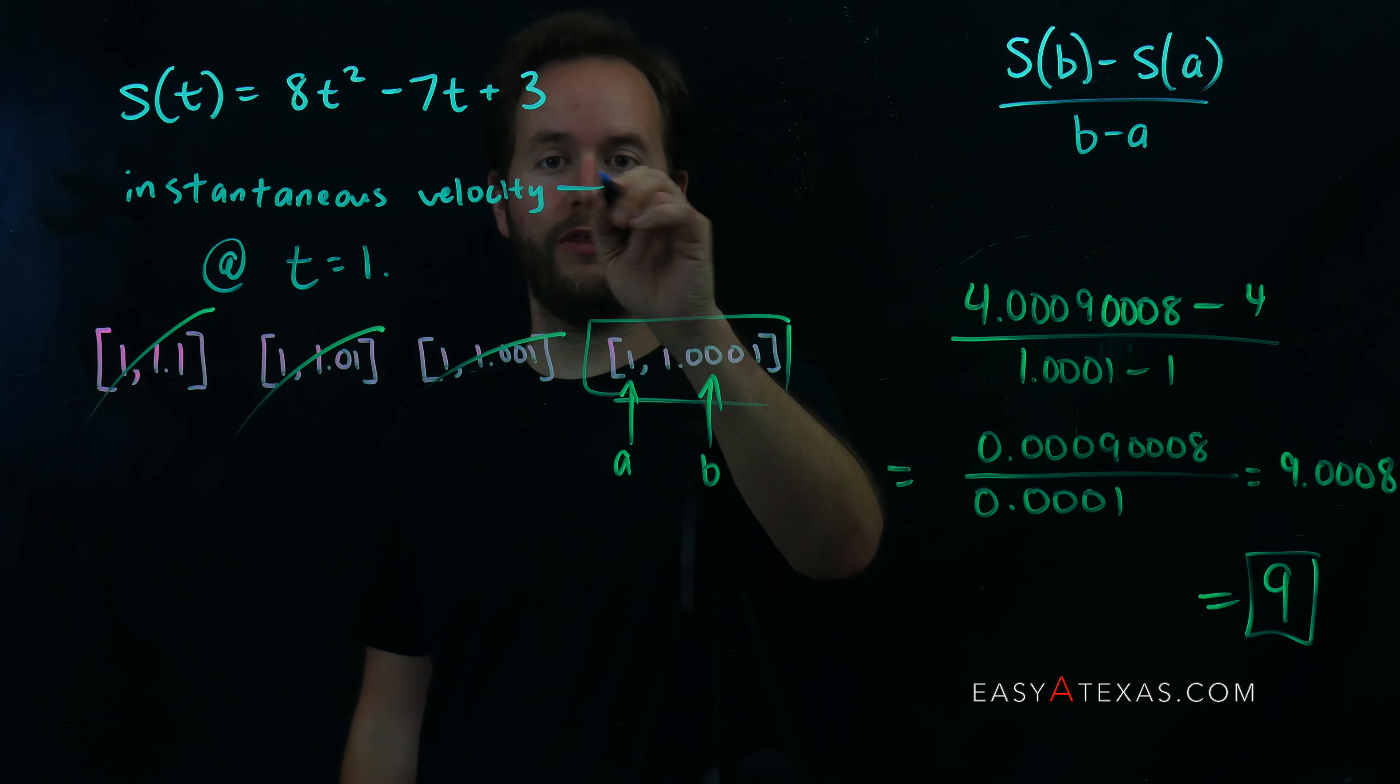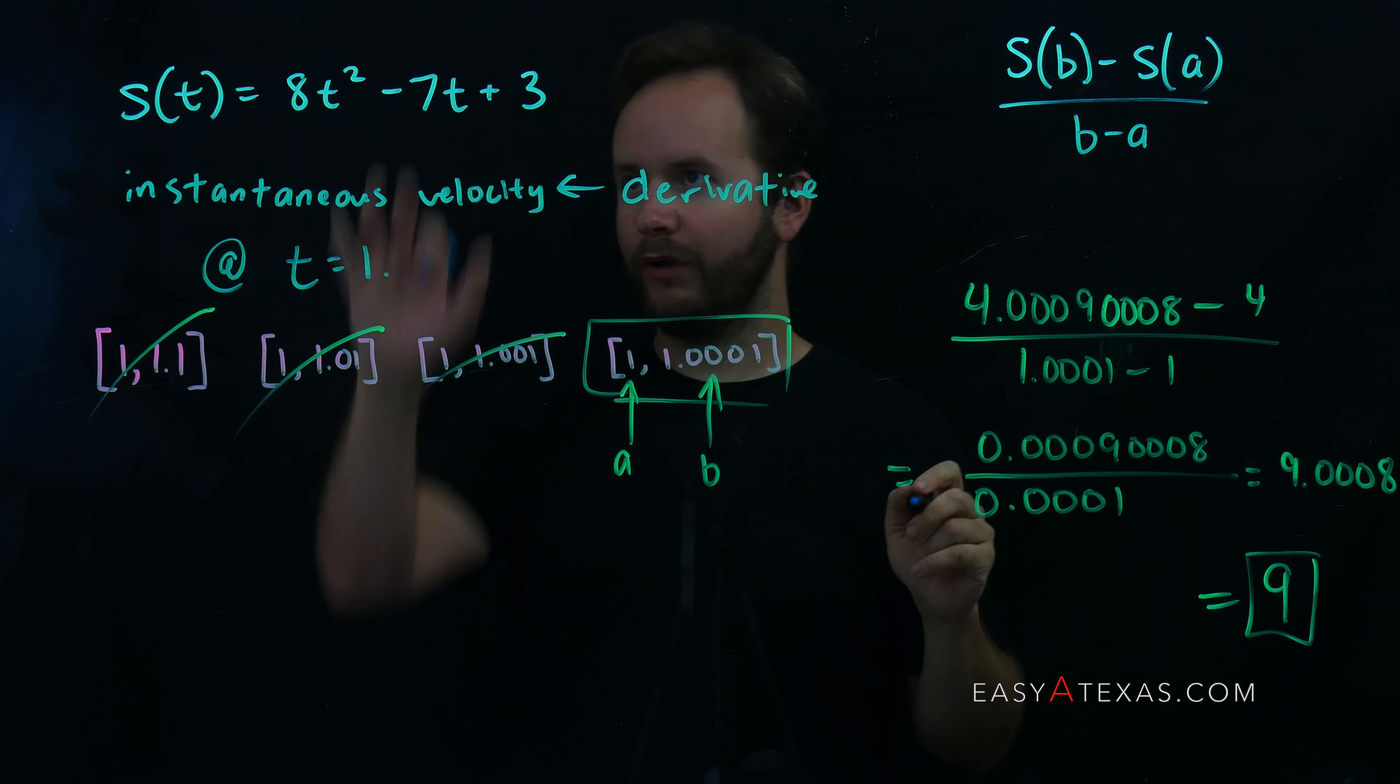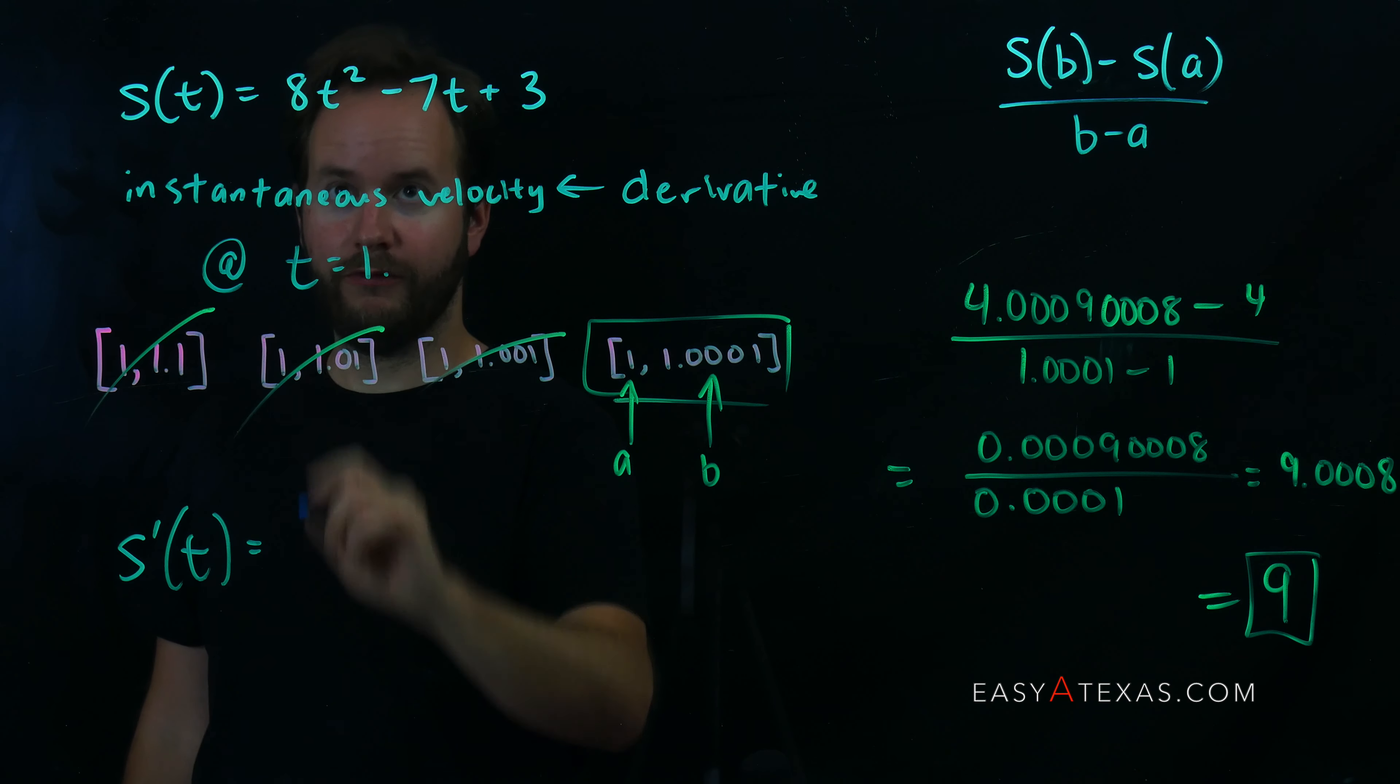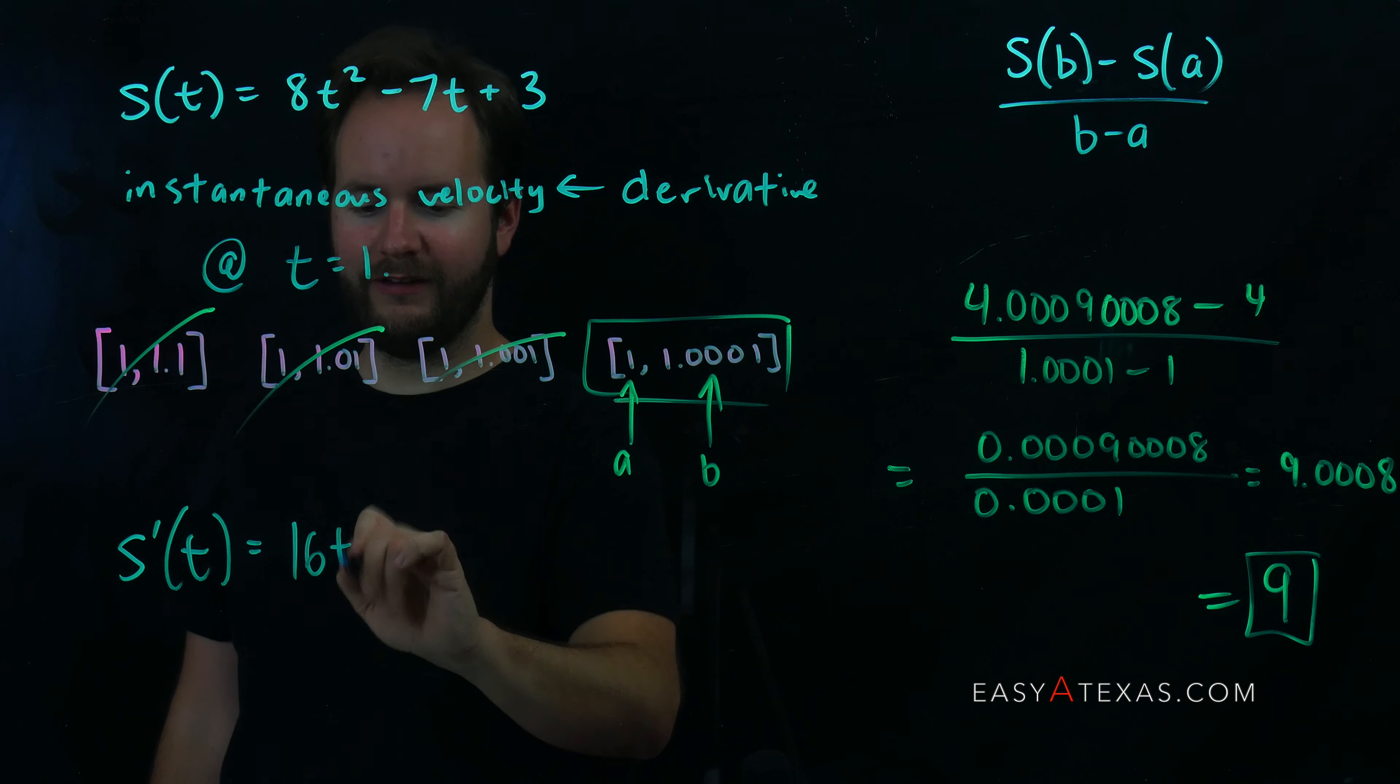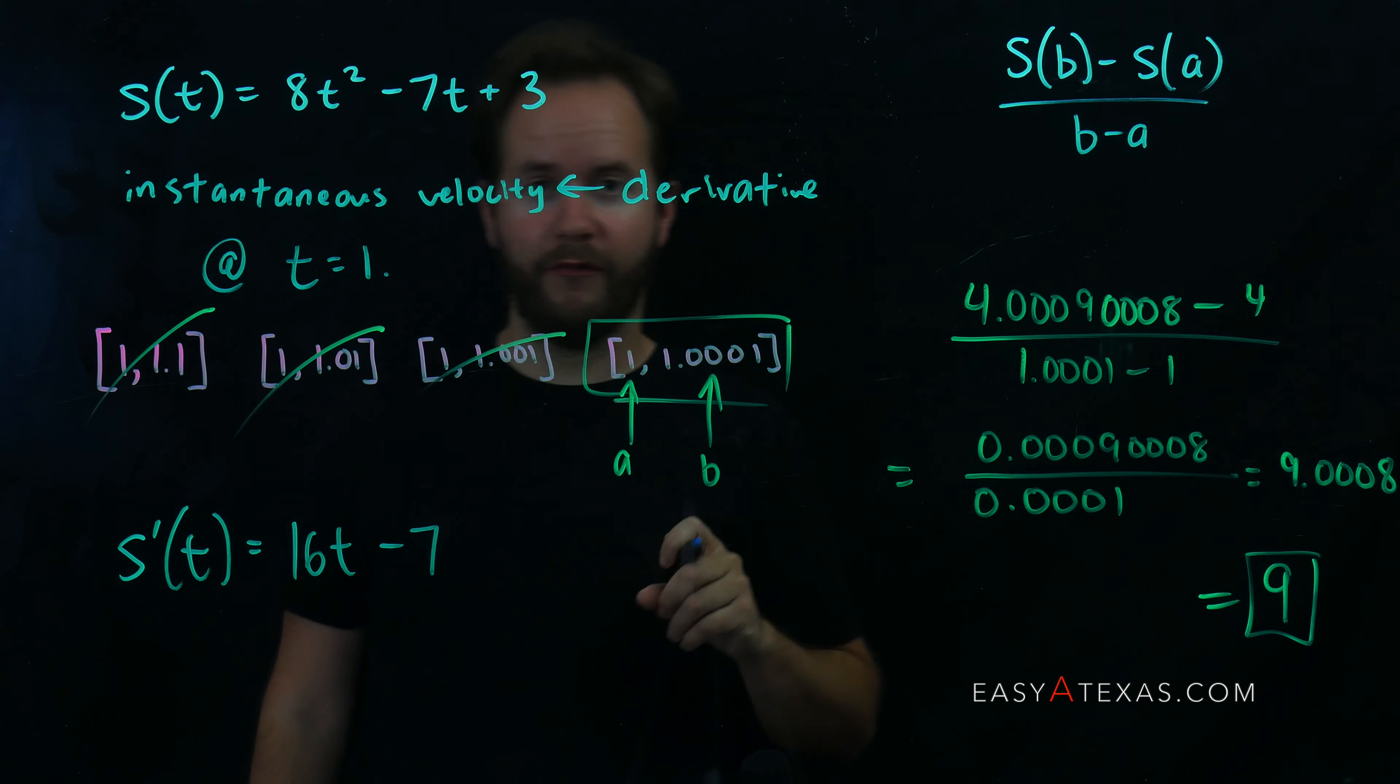Instantaneous velocity is synonymous with the derivative. So instantaneous velocity is the derivative. We're going to take the derivative of this using the power rule. Power rule says the 2 comes down in front, reduce the power by 1, so we get 16t. The derivative of negative 7t is just negative 7, and the derivative of 3 is just 0.